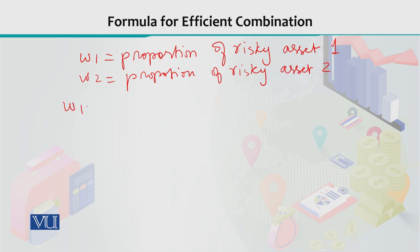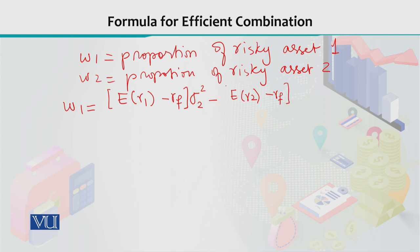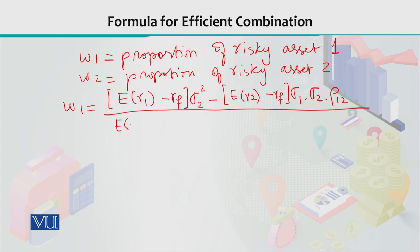Then W1 can be calculated by taking into account the expected return from risky asset one minus the risk-free return, multiplied by the variance of risky asset two's return. Similarly, we consider risky asset two's expected return minus the risk-free asset return, multiplied by the standard deviation of risky asset one's return and the standard deviation of risky asset two's return, further multiplied by the correlation coefficient between risky asset one and risky asset two. This whole expression forms the numerator.